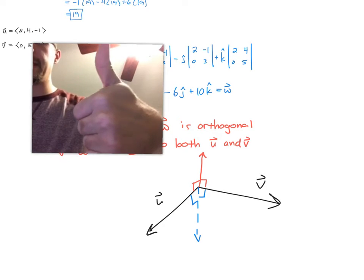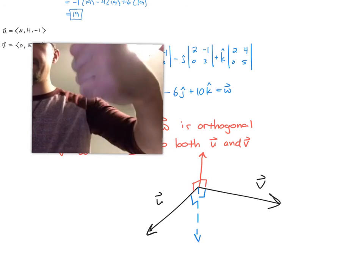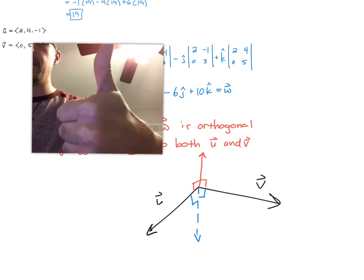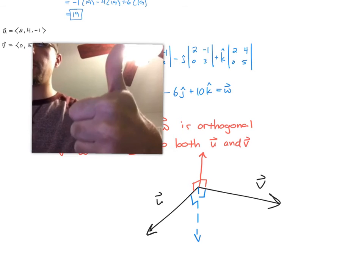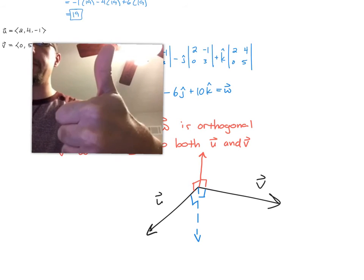and your fingers would be at the starting vector u, and you would have to curl them to get to v. And your thumb says, all right, then it's going up. So in the picture we have, u cross v would be the red one.